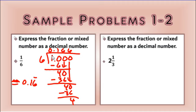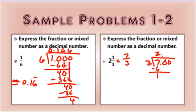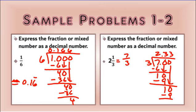Express this mixed number as a decimal number. First I want to put it as an improper fraction. So 2 times 3 is 6, plus 1 is 7 — so 7 thirds. It's really 7 divided by 3. 3 goes into 7 two times. 2 times 3 is 6. Subtract and get 1. Bring down the 0. 3 goes into 10 three times. 3 times 3 is 9. Subtract and get 1. Bring down the 0. 3 goes into 10 three times again — so I can see that the 3 is repeating. My answer would be 2.3 repeating.